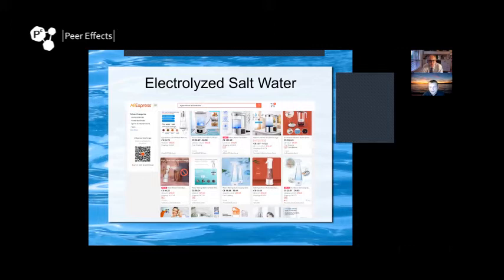You can buy or make electrolyzed salt water using a machine from AliExpress or eBay — around 100 bucks. When I got my machine I noticed the markings on the glass were off; it said 600 mL when I'd put in half a liter, so don't trust the markings on the glass. Unfortunately they come from China, but the machine does work.